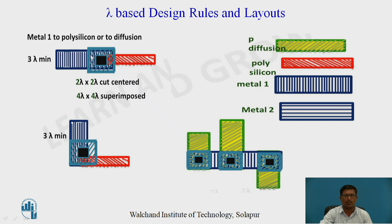For contacts between different materials — for example Metal 1 to polysilicon or to diffusion — the Metal 1 has width 3 lambda and polysilicon has width 2 lambda. To establish a contact we use a metal-to-polysilicon contact having dimension 4 × 4, with a 2 × 2 cut centered inside. If metal is perpendicular to polysilicon meeting at a point, the contact is 4 × 4 superimposed. For metal to P diffusion contacts, the contact dimension is also 4 × 4.